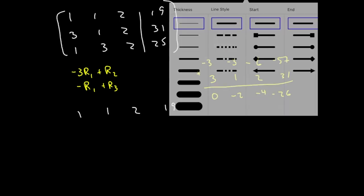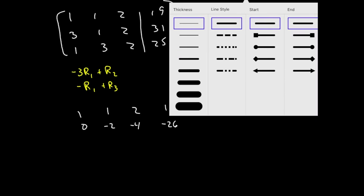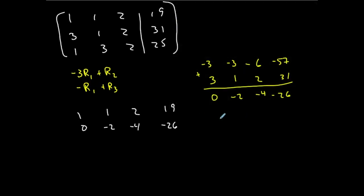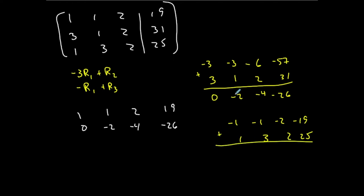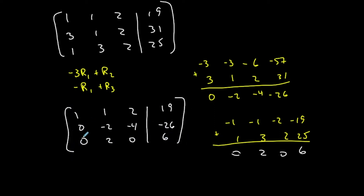That new row 2 is 0, negative 2, negative 4, negative 26. Now for row 3: the opposite of row 1 is negative 1, negative 1, negative 2, negative 19. Adding that to row 3 gives 0, 2, 0, 6. So I've got zeros underneath this pivot. Anytime I have a 1 here, I use it to make zeros underneath it.